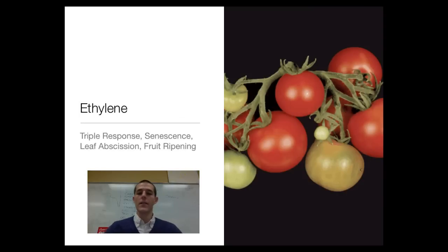The last hormone to talk about today is ethylene. Ethylene has several major functions. Ethylene is actually a gas that is produced by plants. It's not necessarily a hormone that is made in one part of the cell and transported to another, or made in one part of the plant and transported to another part. Ethylene is a gas that is produced.